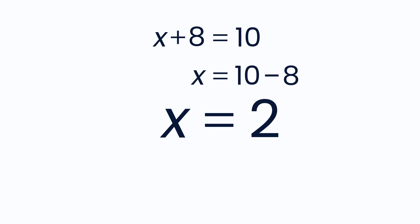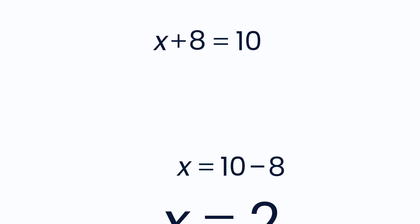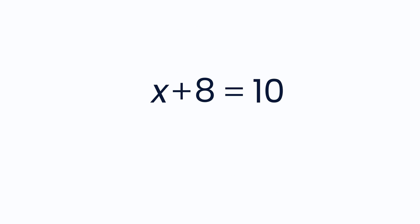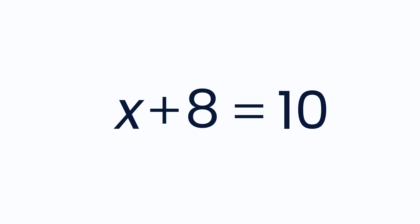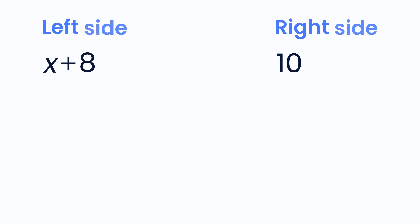To make sure you solved the equation correctly, you can check your answer. You replace x with 2 in the original equation. This gives you 2 plus 8 equals 10, which means that x equals 2 must be the correct answer.